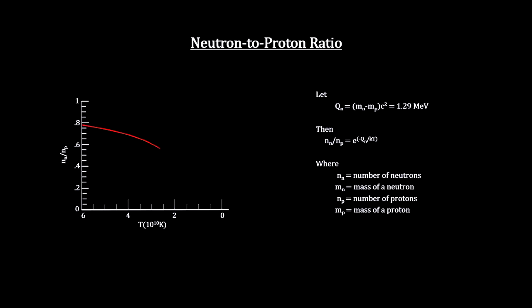Left unchecked, the universe would have had only one neutron left for every million protons by the time it was only six minutes old.